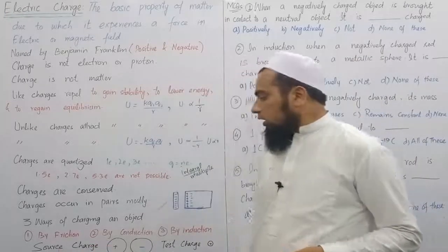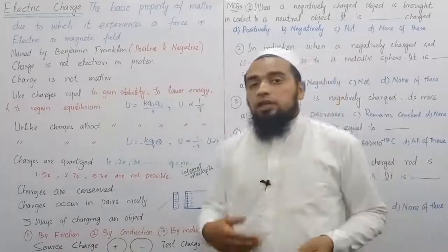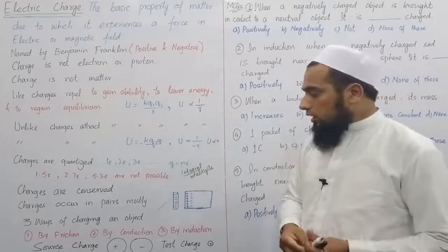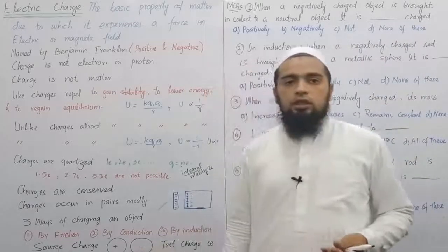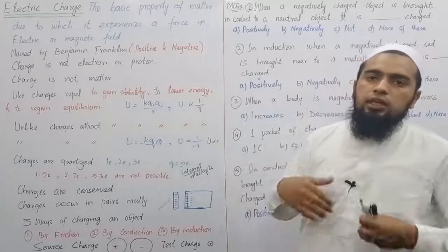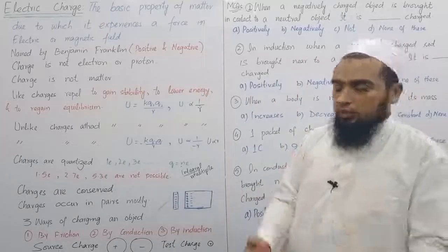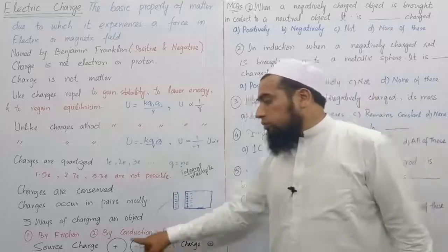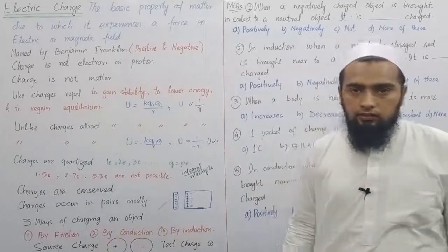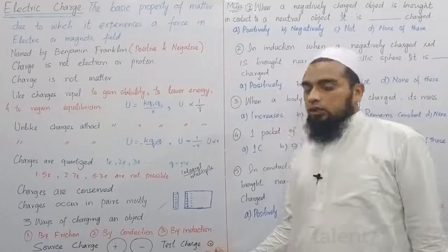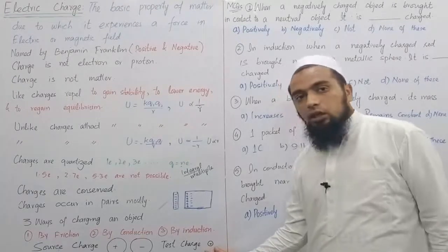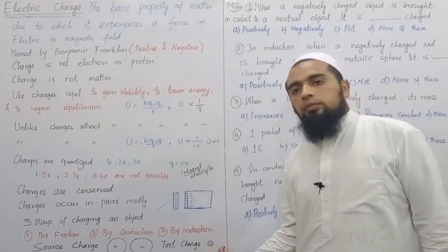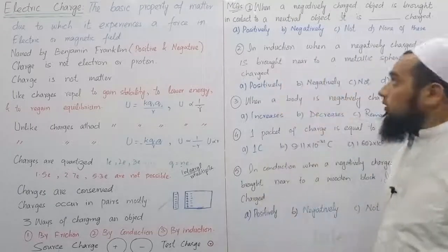Source charge is the charge which is under observation — the one we are studying in a problem. It can be positive or negative. Test charge is the charge used to test the source charge. It is a very small charge and is conventionally taken as positive, although it can be negative too.